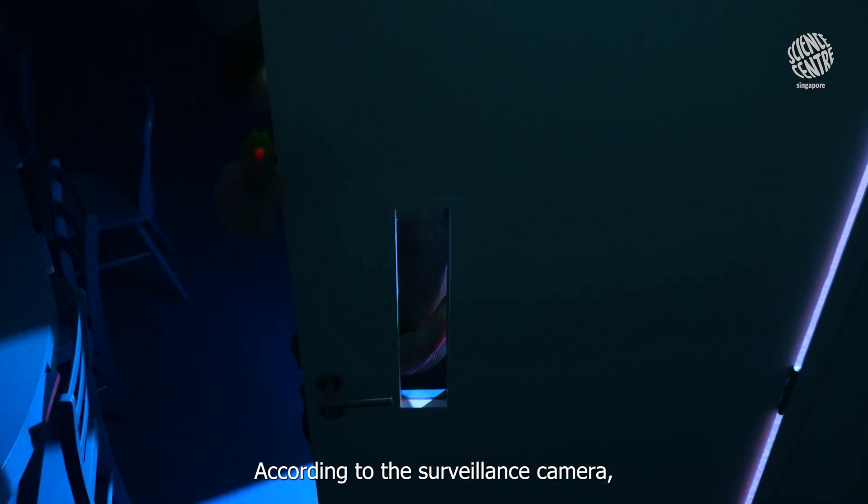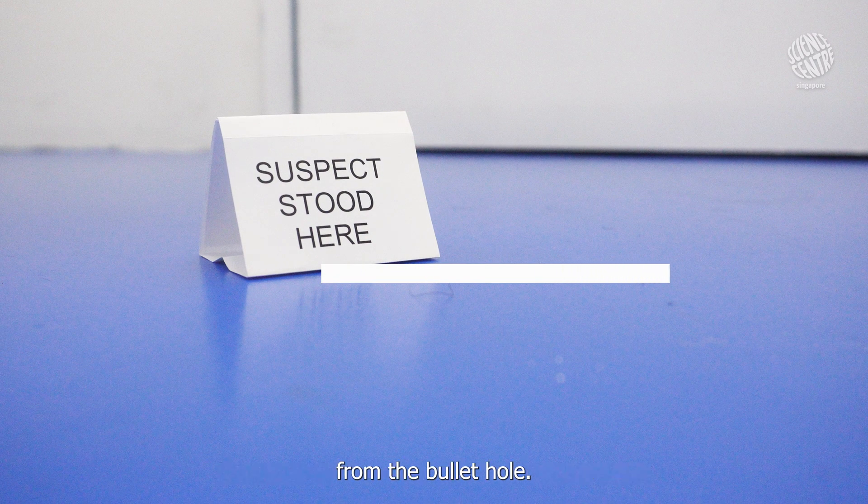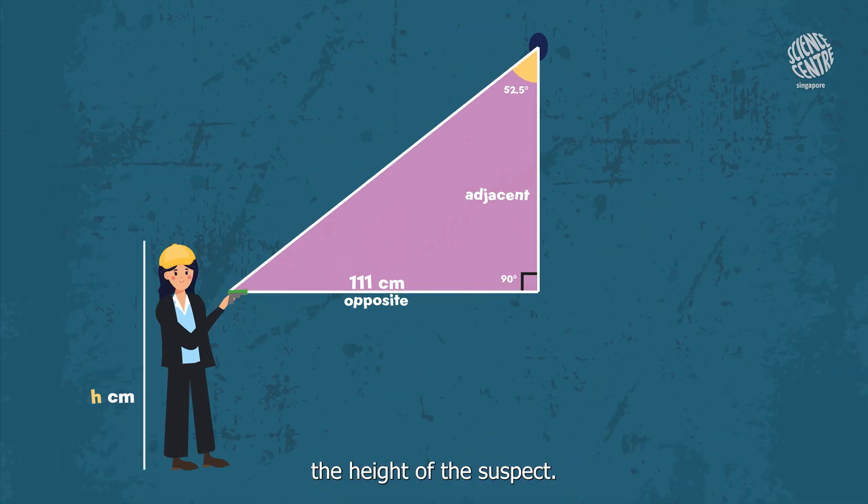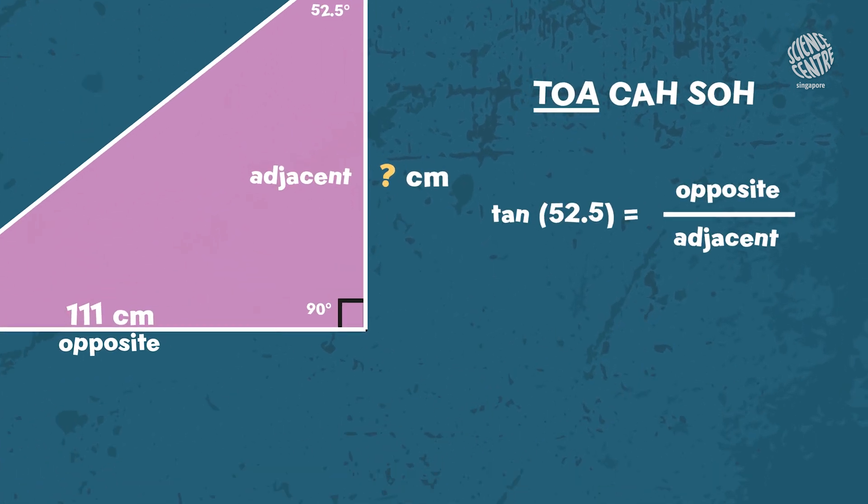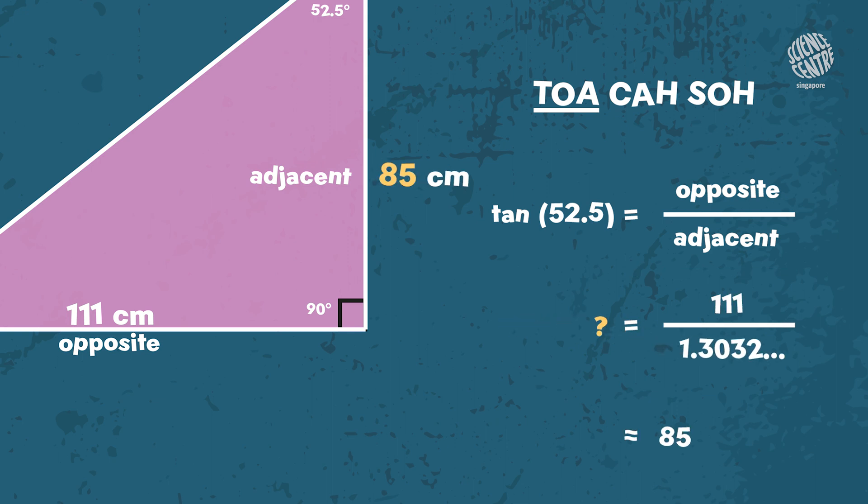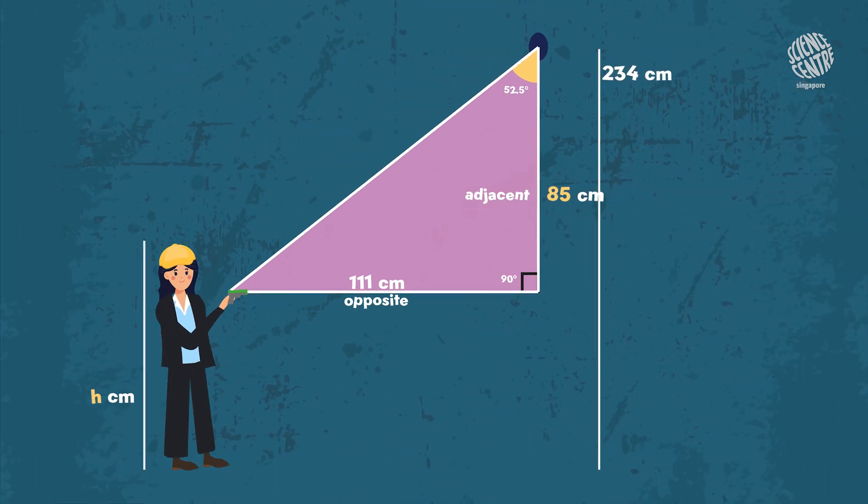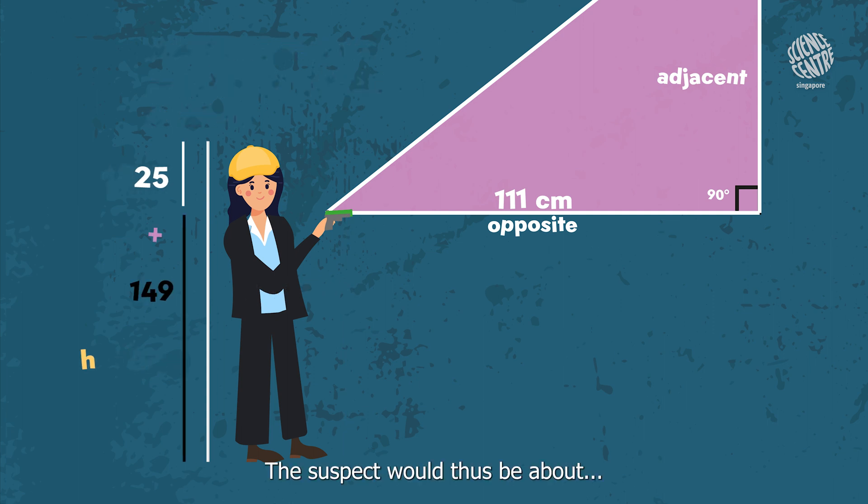According to the surveillance camera, the suspect was about 111 cm away from the bullet hole. By utilizing this distance, we can estimate the height of the suspect. The length of the adjacent is calculated using the tangent ratio. We would have to subtract the length of the adjacent from the height of the bullet hole. And then add 25 cm, the suspect will thus be about 174 cm tall.